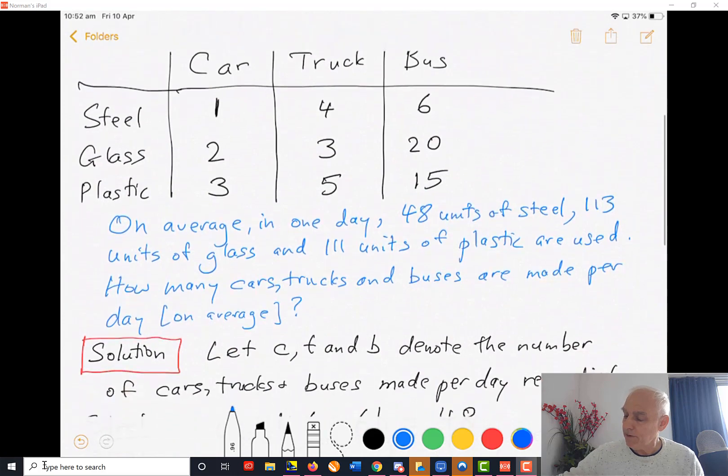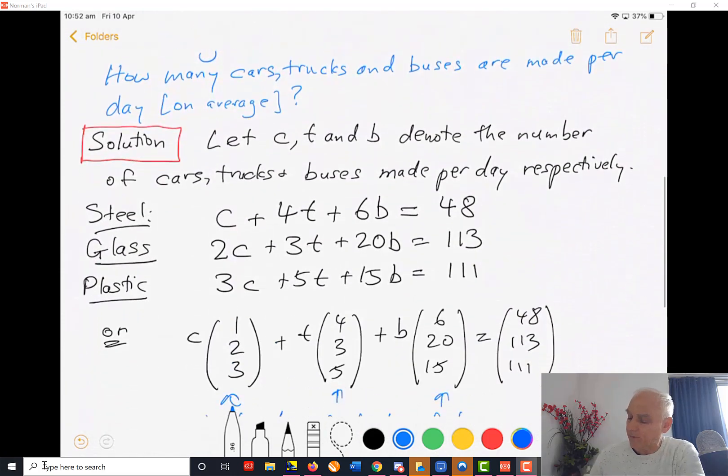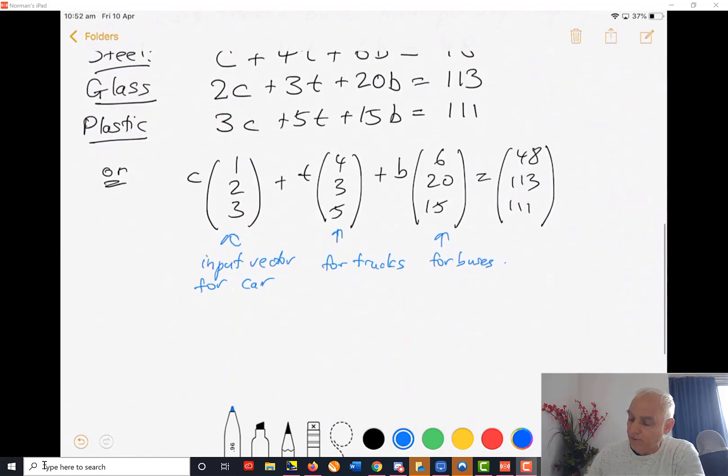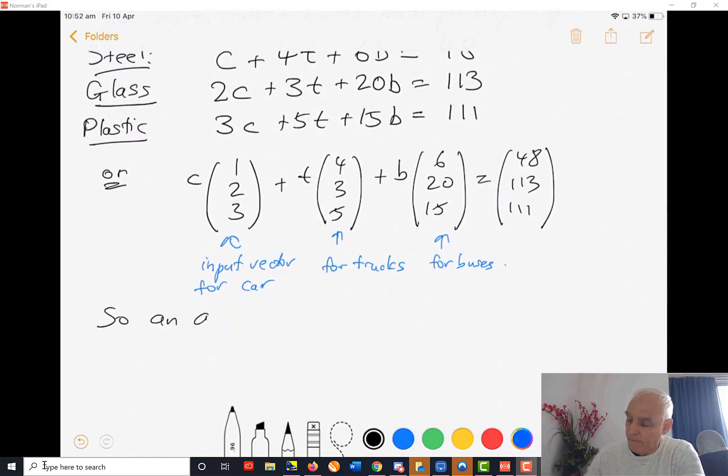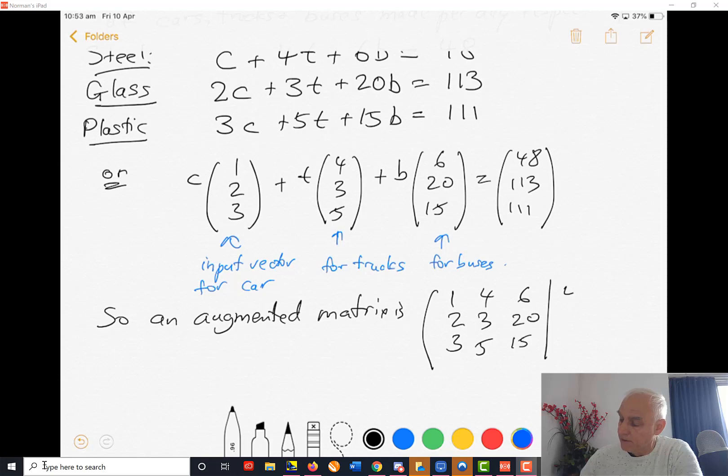Using either of these approaches, we can write down an augmented matrix for the system. The augmented matrix is (1, 4, 6 | 48; 2, 3, 20 | 113; 3, 5, 15 | 111). These are a little bit bigger numbers than we're used to, but we can deal with this. We are going to row reduce this because we want to solve for C, T, and B.